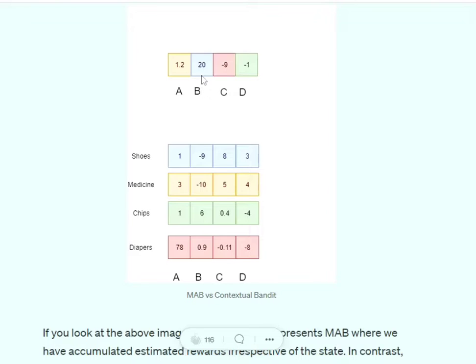Once you train the environment, always B would be shown to all customers followed by A, followed by D, followed by C. As I told you earlier, the context is missing. In case of contextual bandits, see how the matrix would look like.